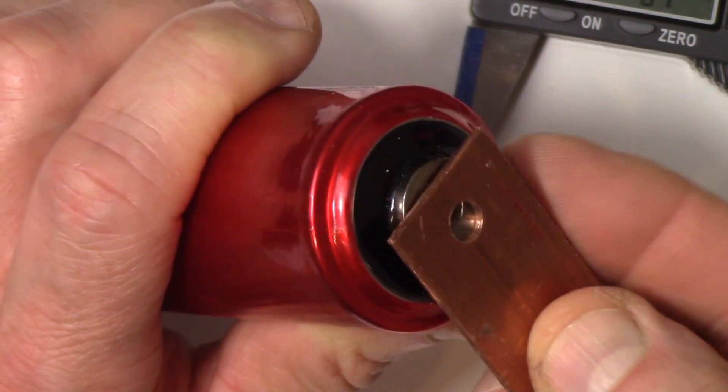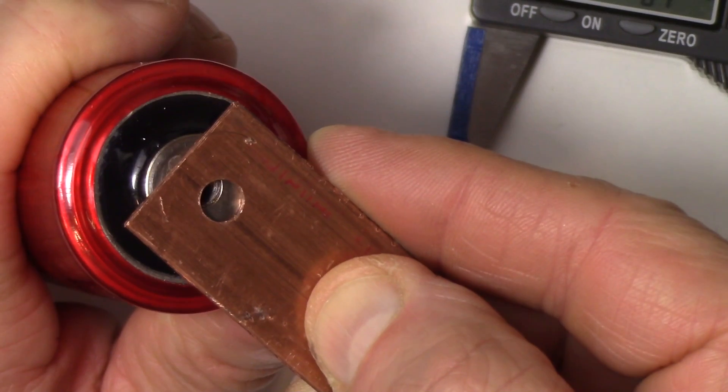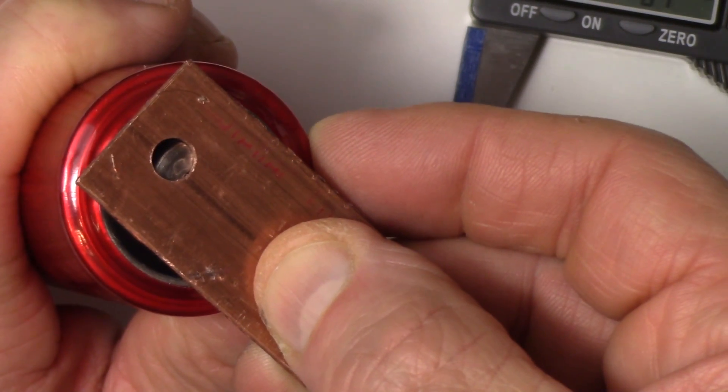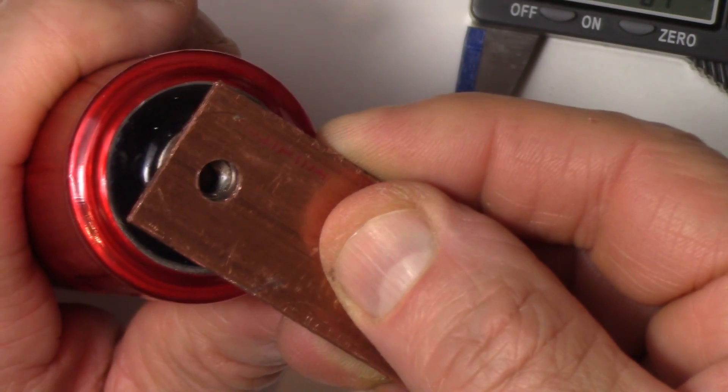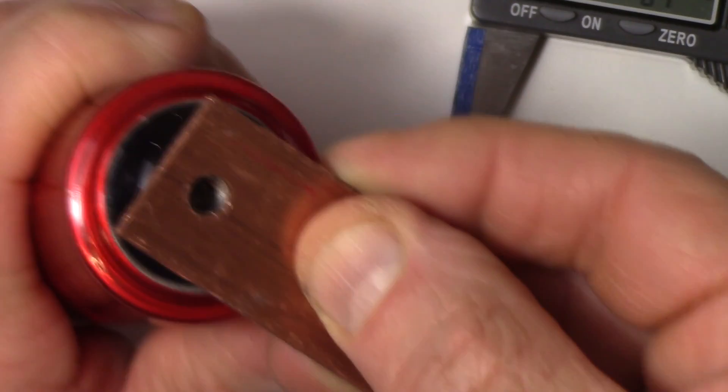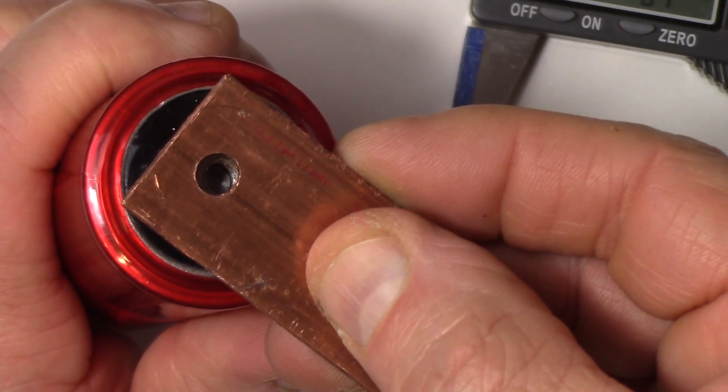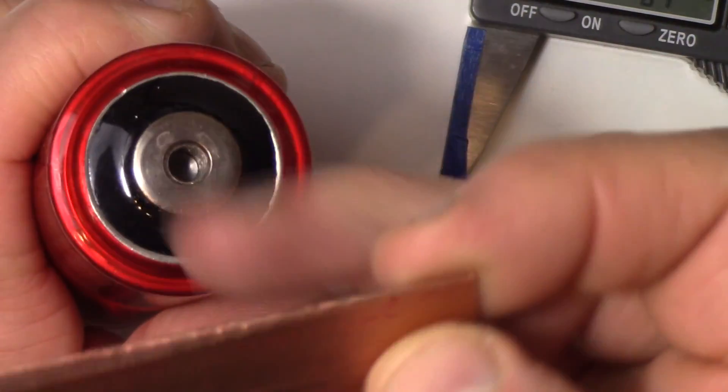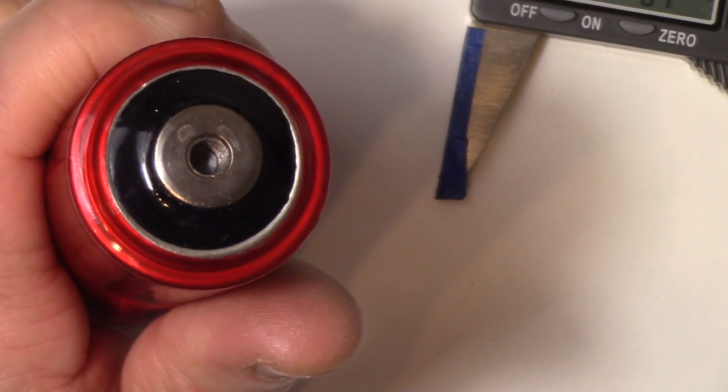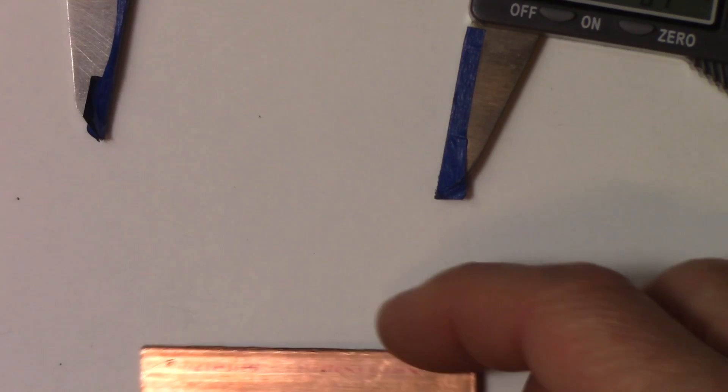That's what you want. You don't want it here because then you're missing contact. And you don't want it way over here because then you're wasting copper. You're using too much copper and this stuff's not cheap. So you want just right or just a little bit of overlap over the contact surface like I have here.